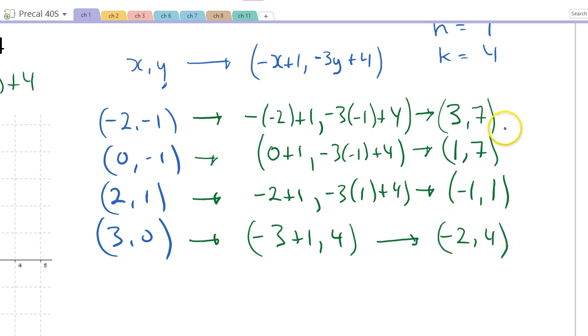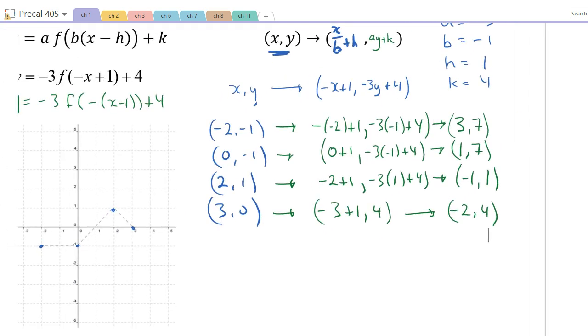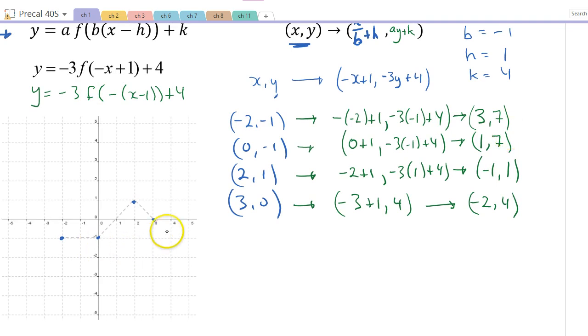Now all I have to do is put those points down and then plot them. So I have (3, 7), 3 comma 7, which is, whoa, 4, 6, 7, maybe up over there. And then I have a (1, 7), which is over here. And then I have a (-1, 1), positive 1, which is over here. And then I have a (-2, 4), -2 comma 4. So here's what my, here's what it looks like afterwards, if I try to draw this nicely. Oh, if I had a ruler, it would be better. Something like that. There we go, and we get our result.